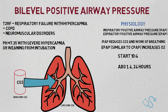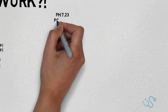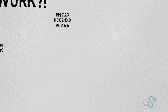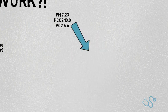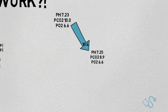Let's give a practical example. We have a patient with COPD who has had an acute exacerbation with type 2 respiratory failure not responding to first-line measures. The team decide BiPAP is indicated based on blood gases showing a pH of 7.23, CO2 of 10.0, and PO2 of 6.6. We start on an IPAP of 10 and EPAP of 4. We repeat the gas in an hour, and the pH is 7.25, CO2 of 8.9, and PO2 of 6.6.